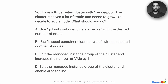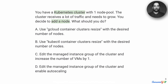In this project scenario, we already have a Kubernetes cluster with one node pool. We are seeing that this cluster receives a lot of traffic and we now need to grow it. How do we grow the cluster? By increasing the number of nodes. So we now want to add an additional node. The key parts of this question are that this is a Kubernetes cluster with just one node pool, and we want to add a node to it.